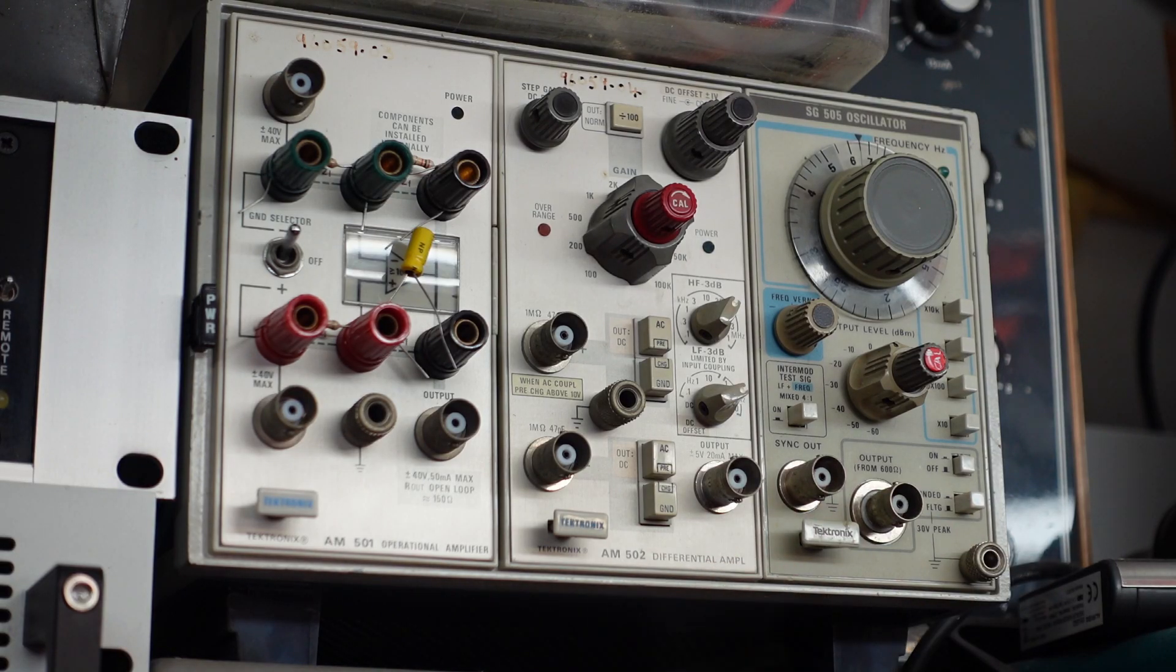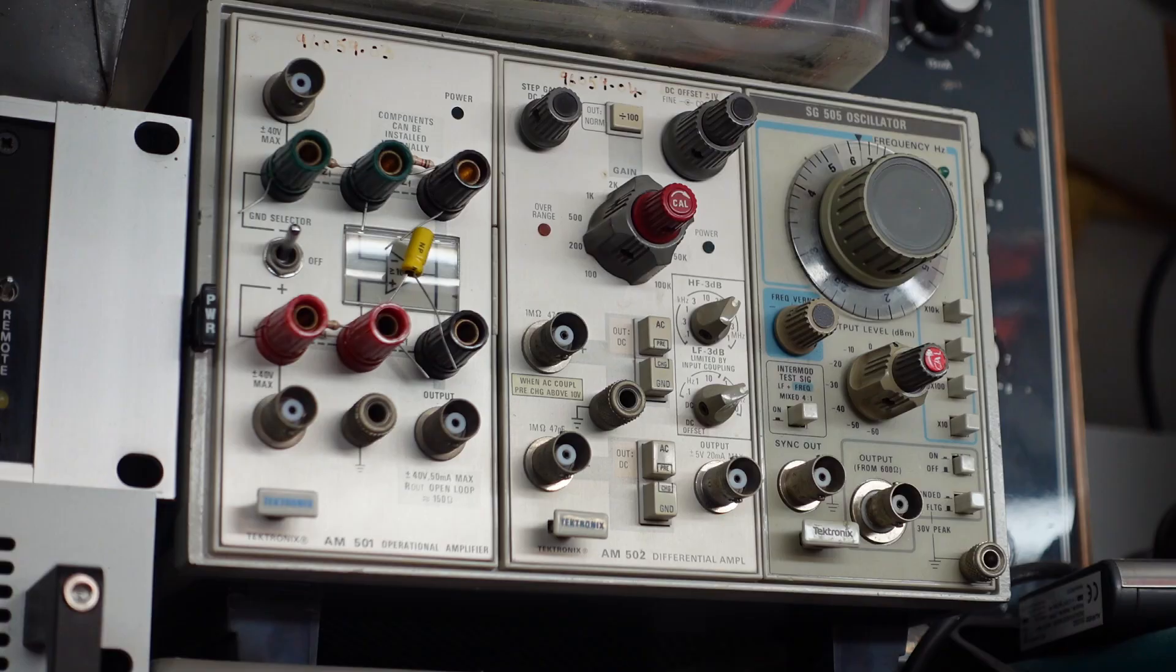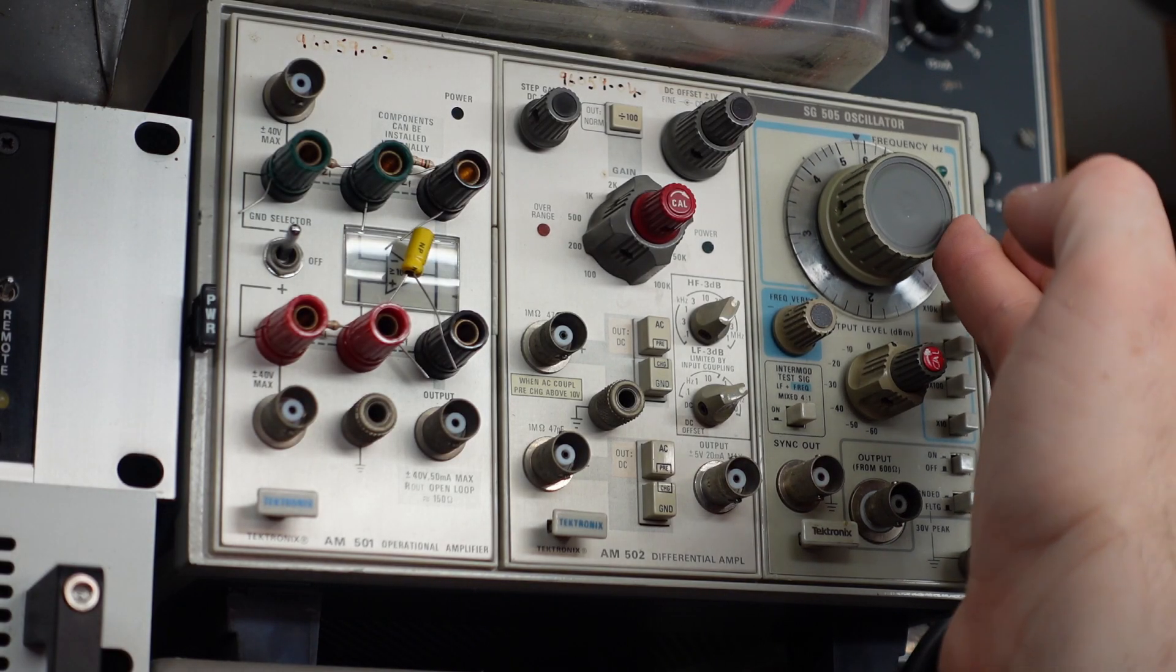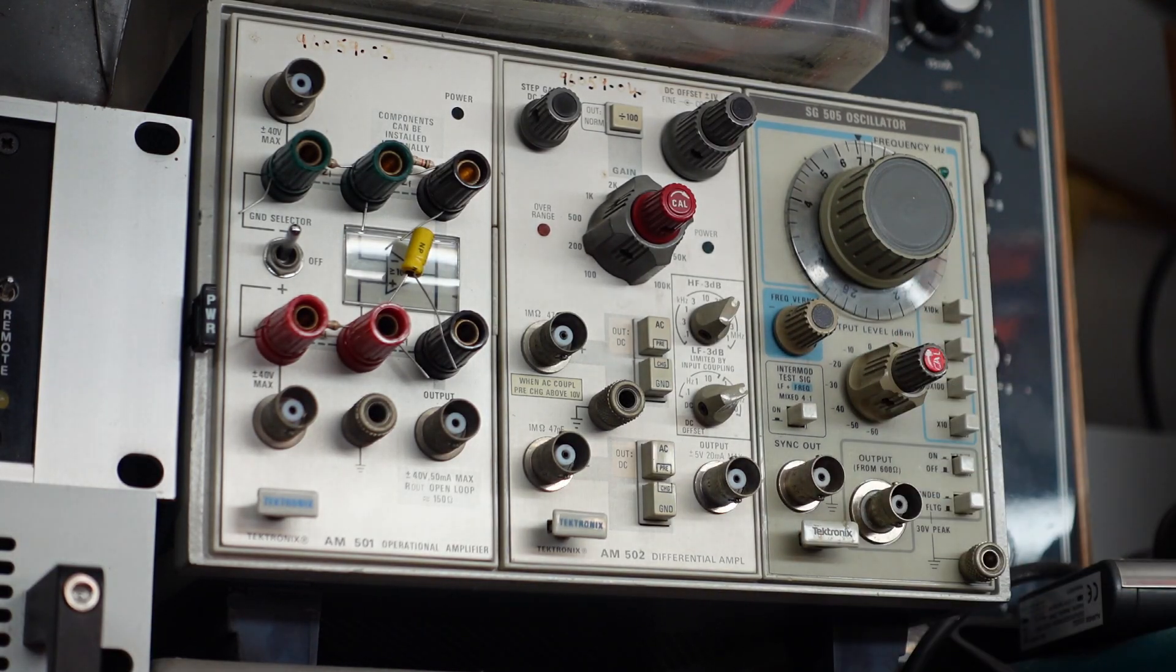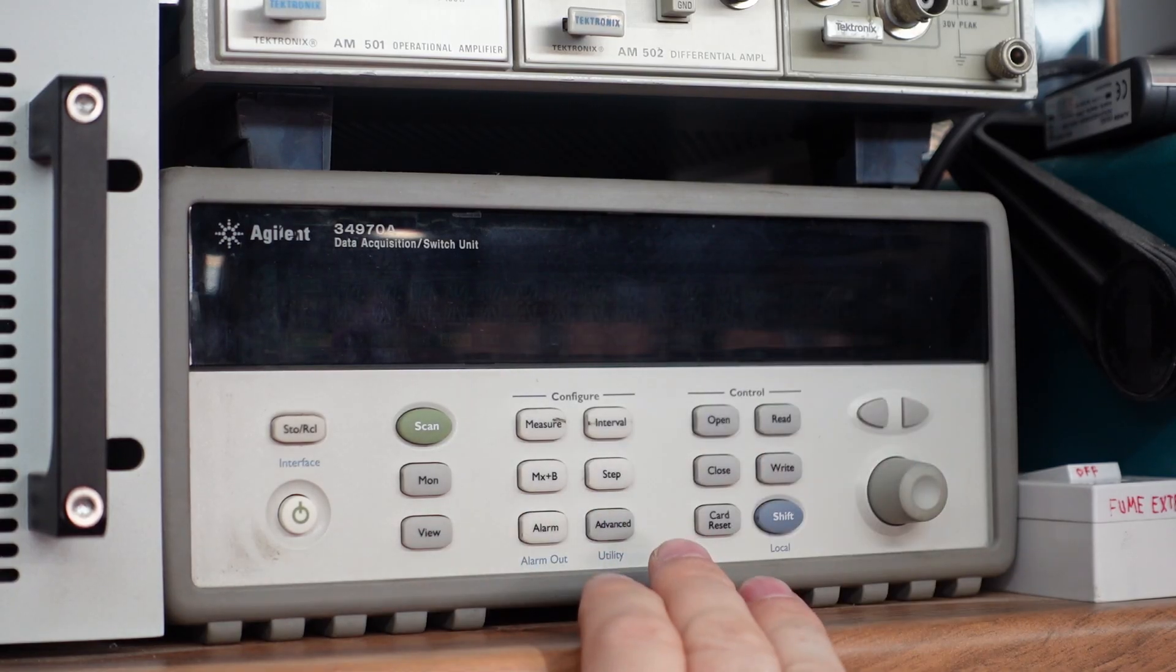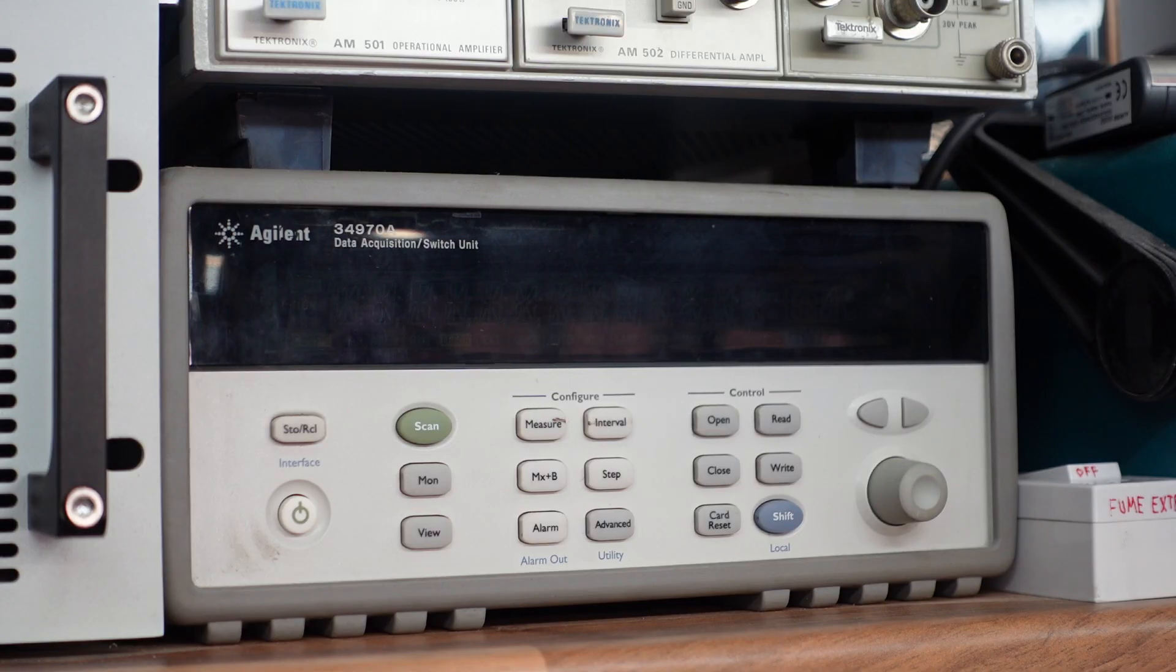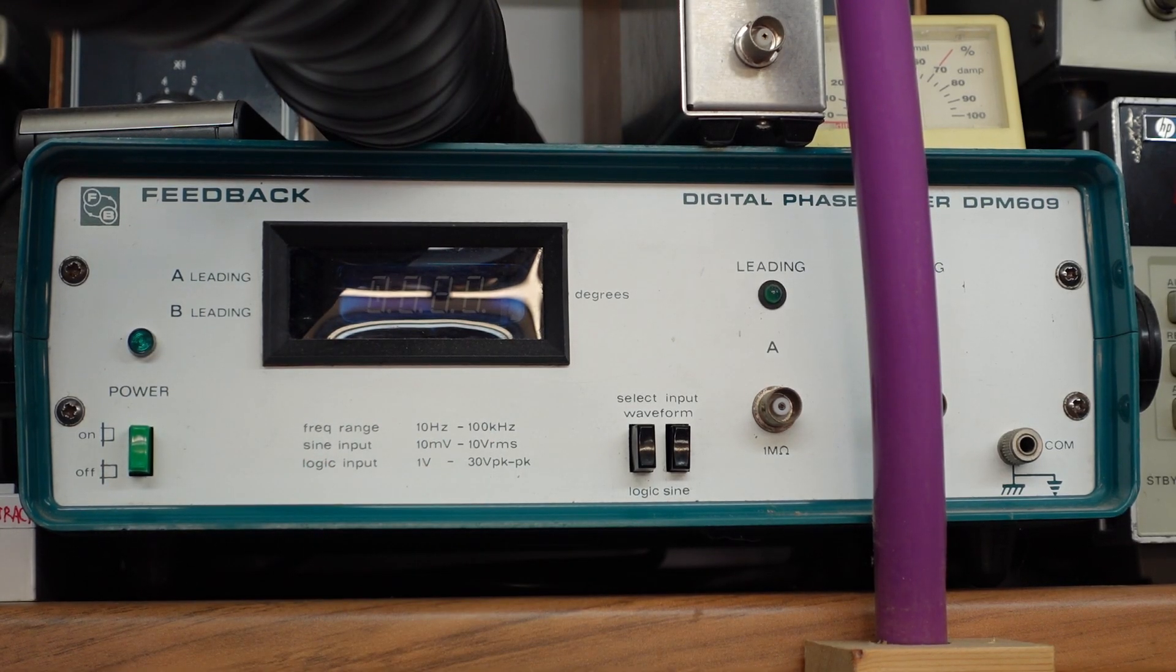You have an AM502, a differential amp, which is sort of a similar thing. And here we've got an SG505 oscillator—very low distortion on this. This is an Agilent 34970A data acquisition switch. It's basically a multimeter with many, many channels. You wouldn't want one normally. And this is a digital phase shift meter.